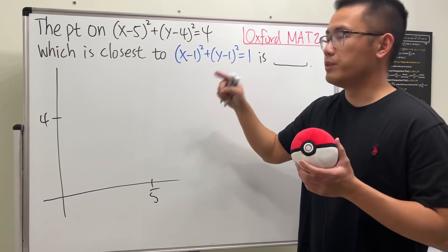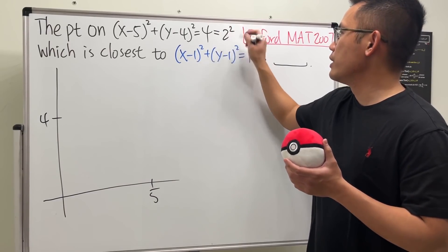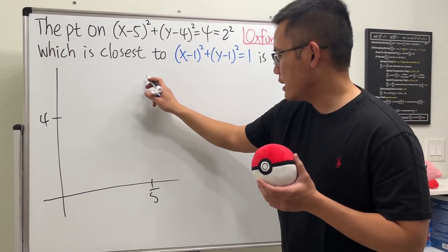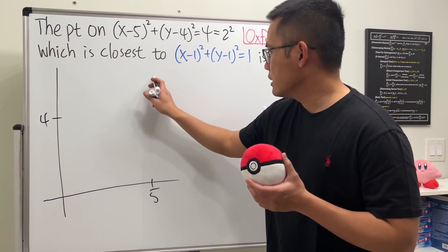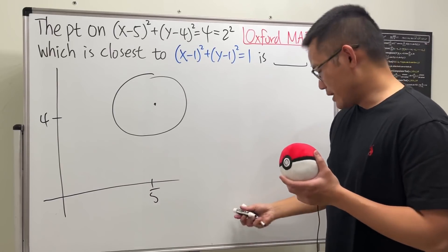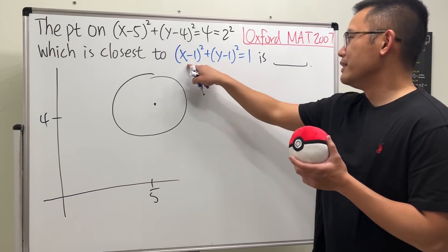The radius is 2 because 4 is the same as 2 squared, so look at this, 2. So here is the center that we have and let me just say this is the picture for the circle. It's not a circle but it's a circle.